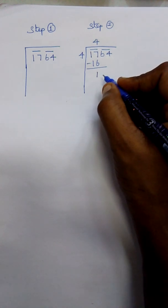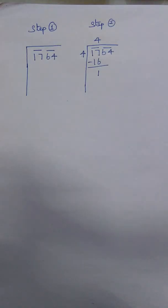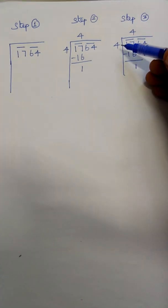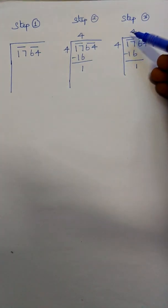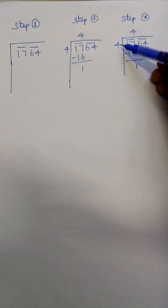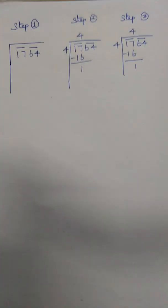The next step is very, very important. We have to multiply the divisor, multiply the divisor by two, or add it by the same number.